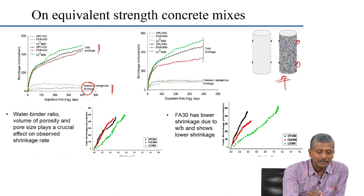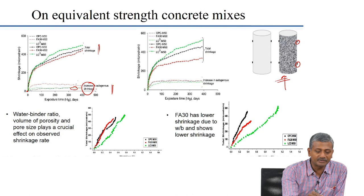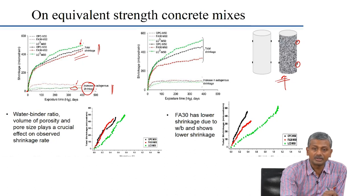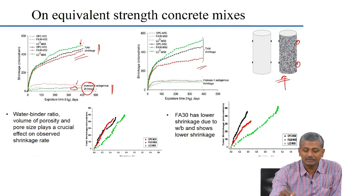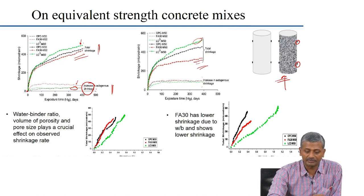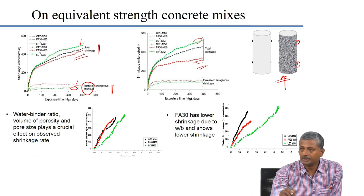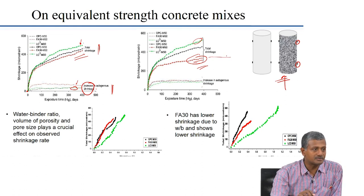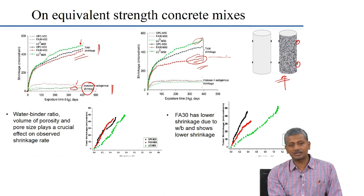Comparing different binder types: the autogenous shrinkage increase for OPC and LC3 are nearly similar, while for the fly ash mix it is slightly higher. As far as total shrinkage is concerned, the LC3 mix shows marginally higher total shrinkage. This is for M30 grade concrete. For M50, differences are more pronounced — OPC and LC3 mixes show slightly higher free shrinkage compared to the fly ash concrete mix. The data extends to 1 year and the graphs are not entirely stabilised, indicating that continuous drying is still occurring in the system.